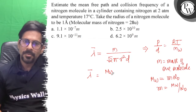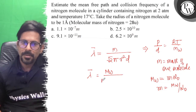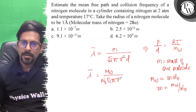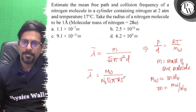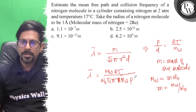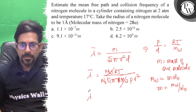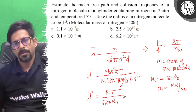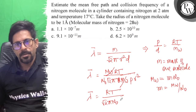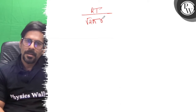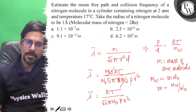Substituting m as MW upon N0, and density as P times MW over RT, into the formula. The MW terms cancel, giving lambda bar equals RT upon root 2 pi into N0 into r squared into pressure.